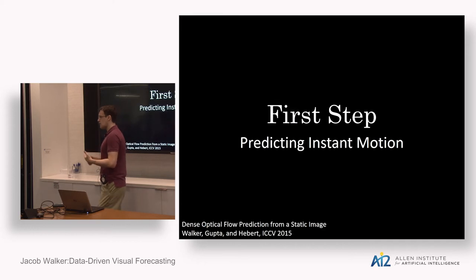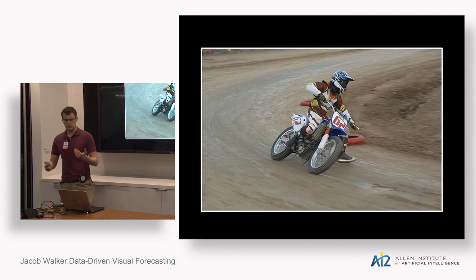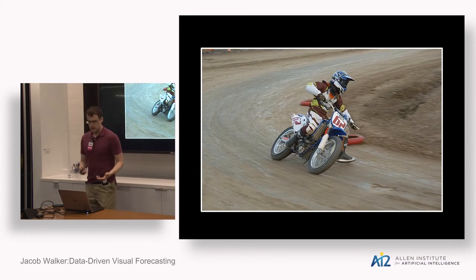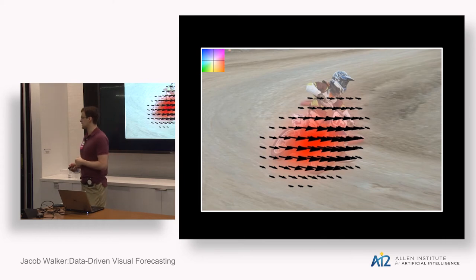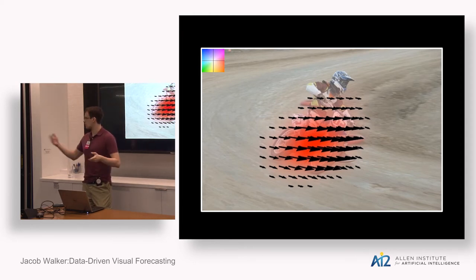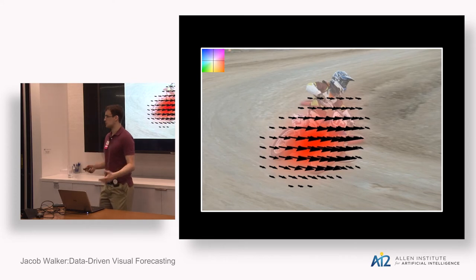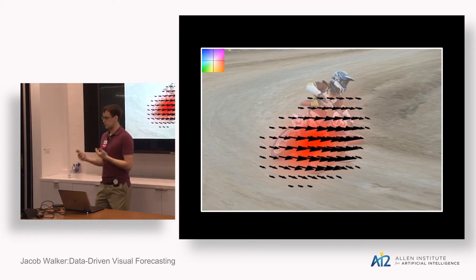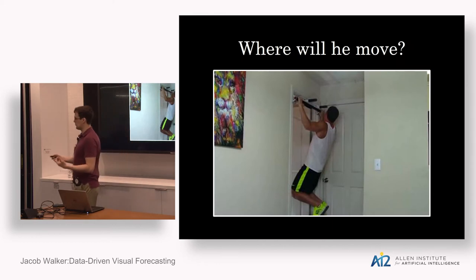Now on to the first step. Consider an image of a motorcycle on a dirt racetrack — we know this object is probably going to move towards the right in the next instant. How can we train a computer model to understand this? The initial idea is to do regression over optical flow: get tons of labels using an optical flow algorithm from unlabeled video, and then train a regressor — perhaps a convolutional neural network. However, this is actually not going to help, because with a single image there's going to be a level of ambiguity in our forecasting.